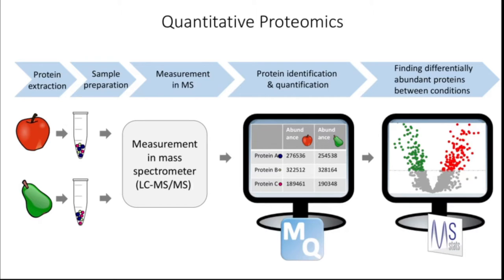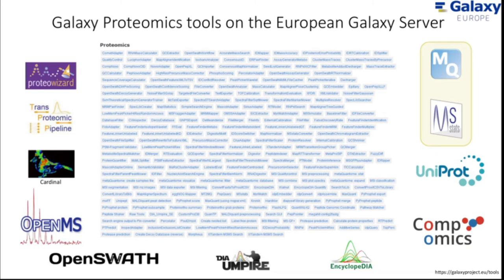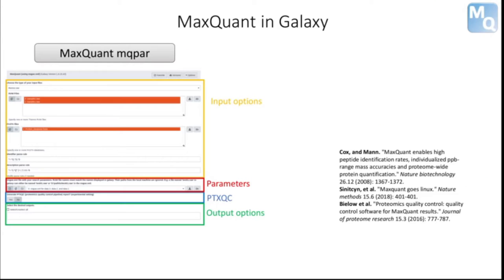We have integrated both MaxQuant and MSstats as Galaxy tools to expand the existing Galaxy proteomics toolkit. MaxQuant was implemented in two different ways. First, the MaxQuant MQPAR tool runs with an existing MaxQuant parameter file, the so-called MQPAR file. In addition to this file, other input files are the raw data and the FASTA database, which specifies all possible proteins of the organism of interest.